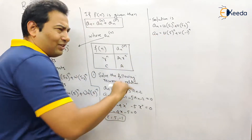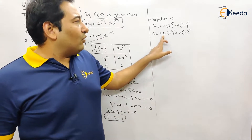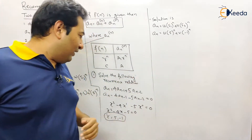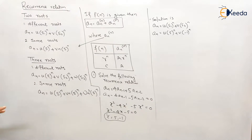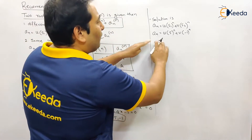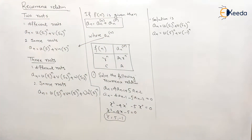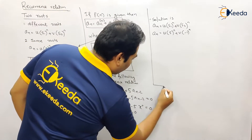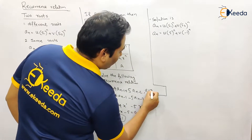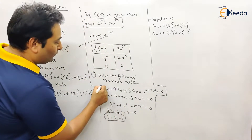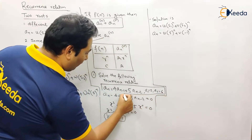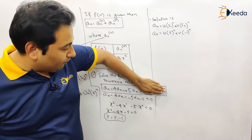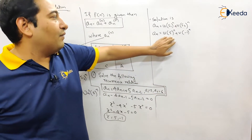This is the required solution. We just need to find the values of u and v to complete it. If only the recurrence relation is given without initial conditions, then a_n = u·5^n + v·(-1)^n is the final answer — we are done. Now let me extend the question with a modification: let a1 = 2 and a2 = 6 as initial conditions.